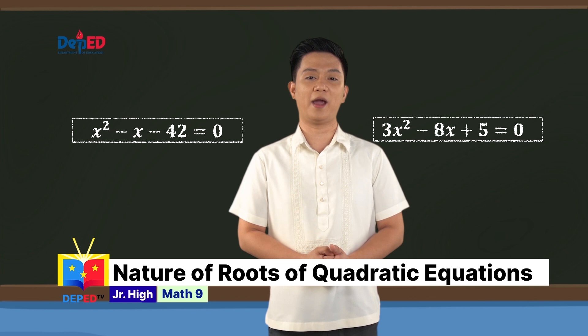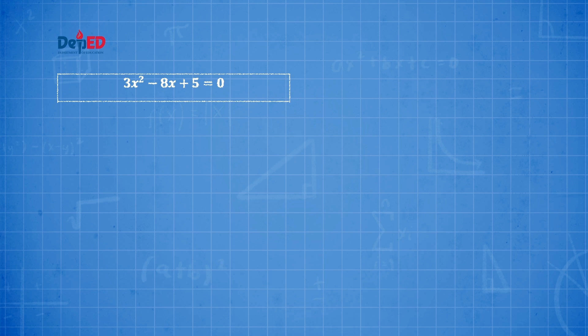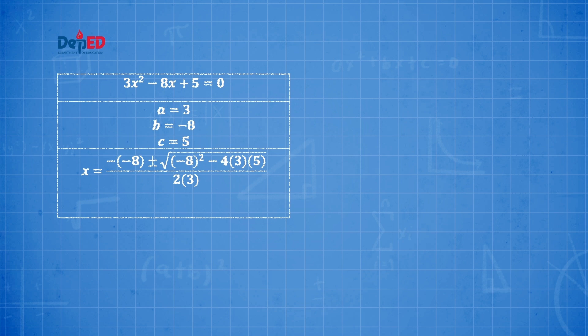Let us get to know another type of discriminant as we work on the second pair: 3x² − 8x + 5 = 0 and x² − x − 42 = 0. We solve 3x² − 8x + 5 = 0 first. The values of the coefficients are: a = 3, b = −8, c = 5. x = (−(−8) ± √((−8)² − 4·3·5)) / (2·3). Then we simplify.